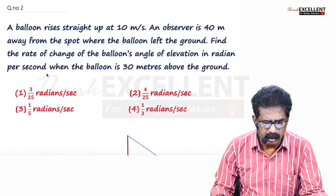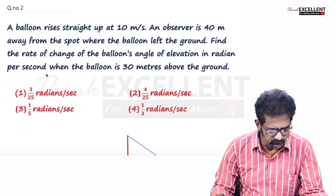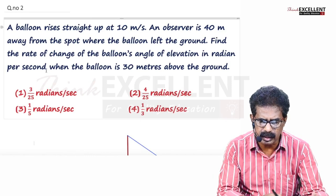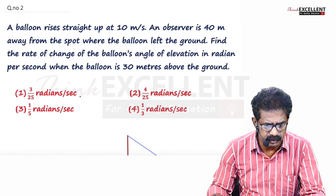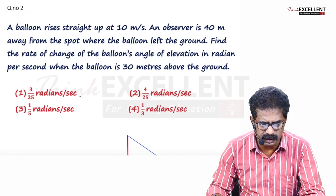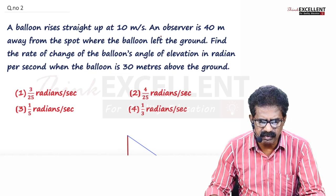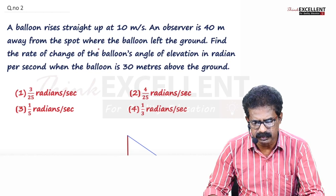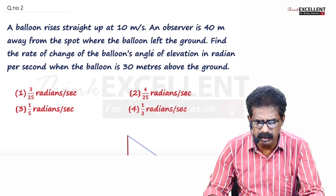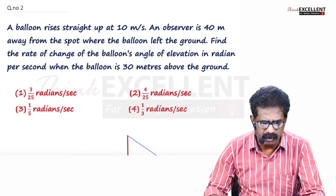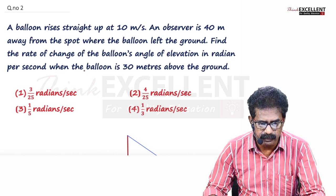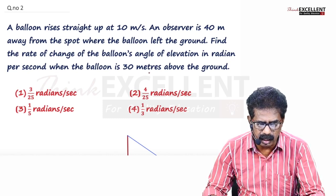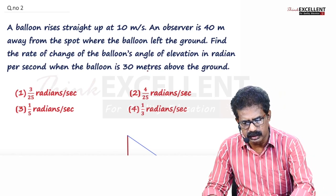Second question. A balloon rises straight up at 10 meters per second. An observer is 40 meters away from the spot where the balloon left the ground. Find the rate of change of the balloon's angle of elevation in radians per second when the balloon is 30 meters above the ground.